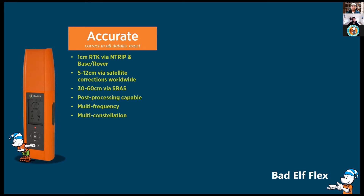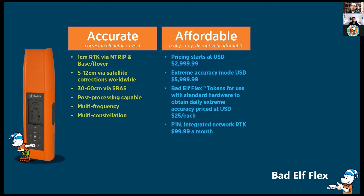We also have our standard mode: the Flex out of the box is a 30 to 60 centimeter sub-meter unit — one to two feet sub-meter — via SBAS. We can do post-processing, and as mentioned, multi-frequency multi-constellation. The Battle Flex is also affordable — truly disruptively affordable. Depending on which flavor of the Flex you'd like, the survey grade or GIS grade, you can pick this up for as affordable as $3,000, and for a fully survey-grade rover you're at $6,000. We have a pay-to-play option if budgets are tight and you want to job-cost extreme accuracy modes.